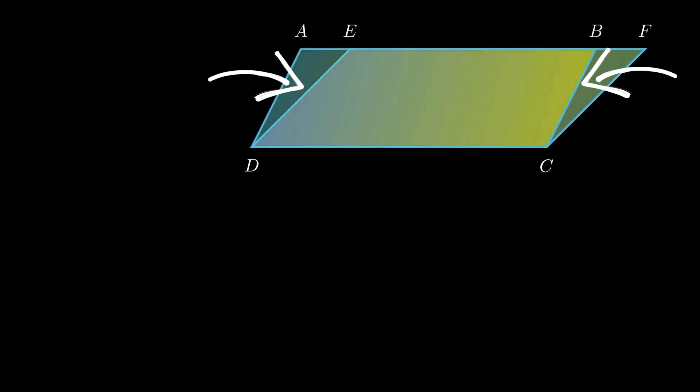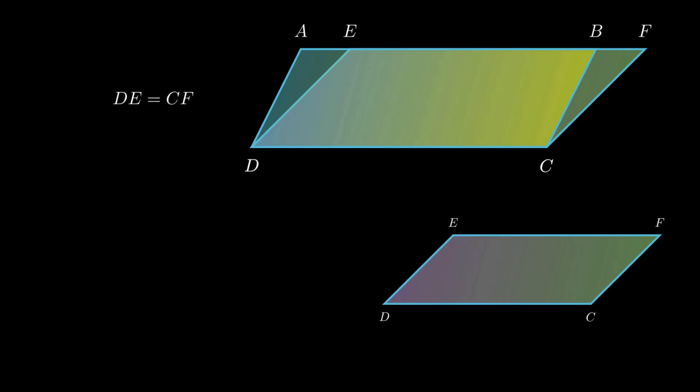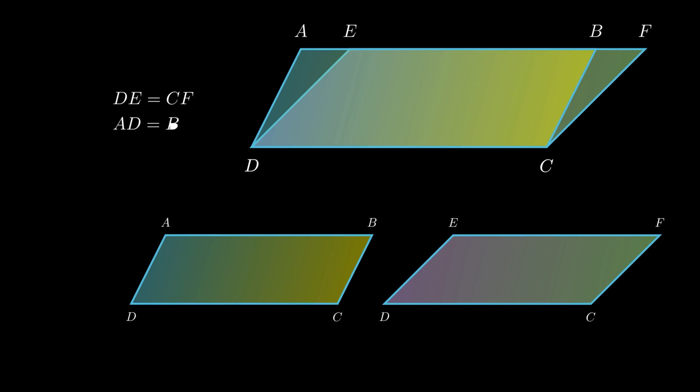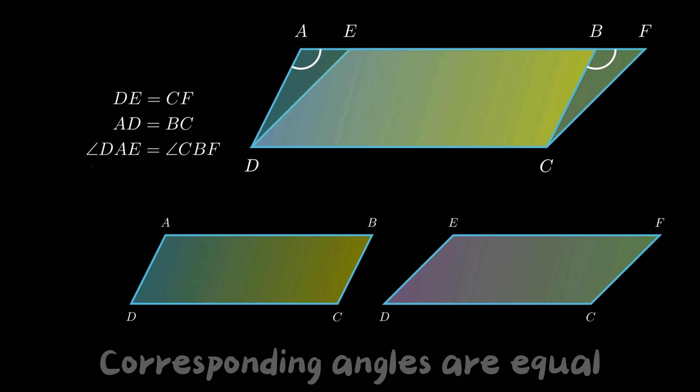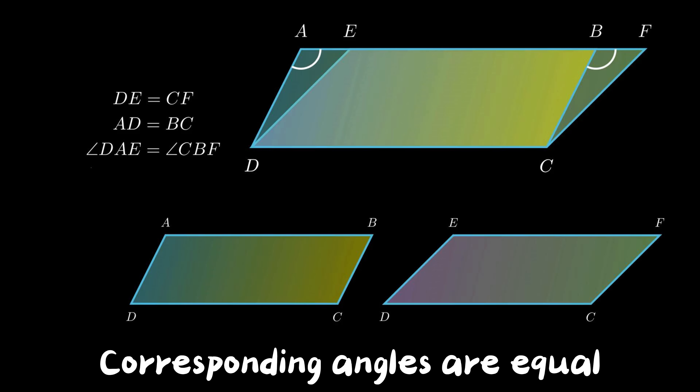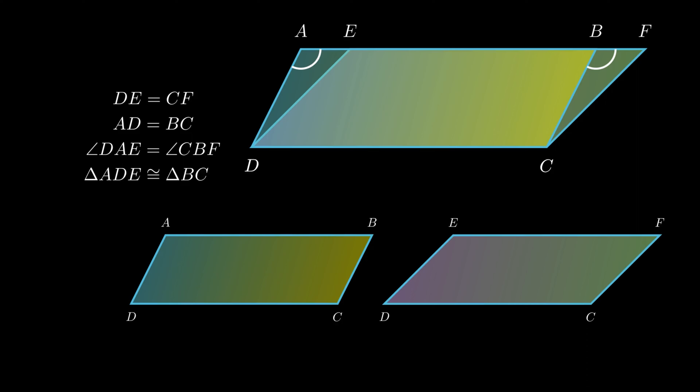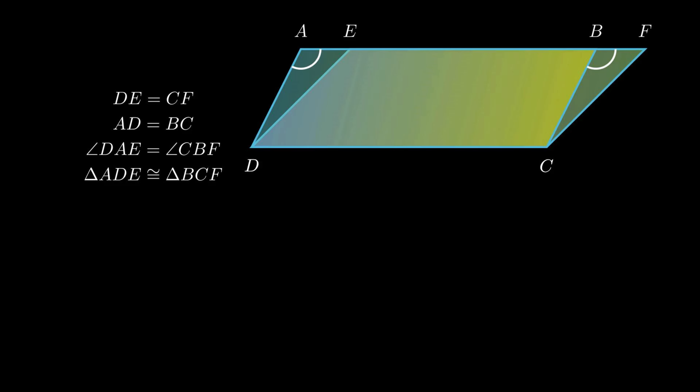To prove this, consider two triangles ADE and BCF. Since opposite sides of a parallelogram are equal, side DE equals side CF and side AD equals side BC. Angle DAE equals angle CBF as corresponding angles are equal when lines are parallel. Therefore, by SSA criteria, triangle ADE is congruent to triangle BCF.